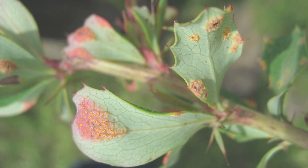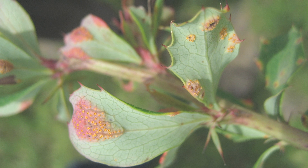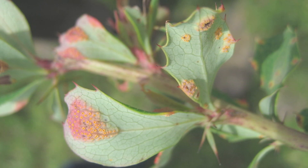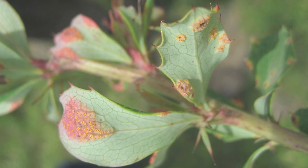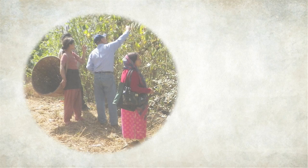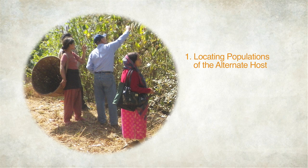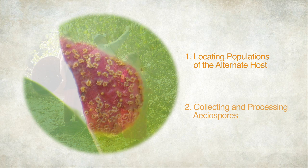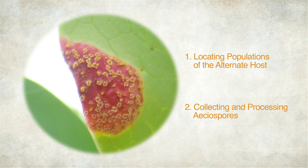This instructional video on isolating wheat stem and stripe rust from barberry species is intended as a reference for those researchers interested in contributing to this effort. To determine the role local populations of barberry may play in the emergence of new races of wheat stem and stripe rust, two significant challenges must be overcome. First, relevant populations of the alternate host must be located. And second, aecial infections found on plants within those populations must be carefully processed to determine if they are the result of cereal rust infection, and if so, which cereal host they specialize on. We will address each of these challenges in turn.